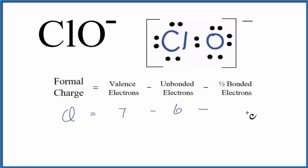And we'll subtract from that one half of the bonded valence electrons. These two right here, they form the chemical bond between the chlorine and the oxygen. So we have two of those. 7 minus 6 minus 1, that gives us 0.